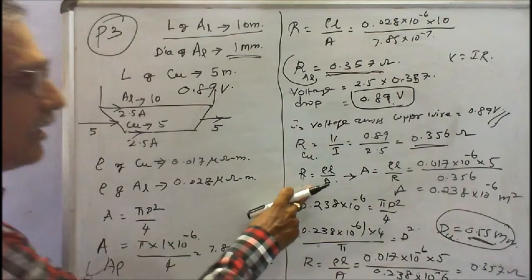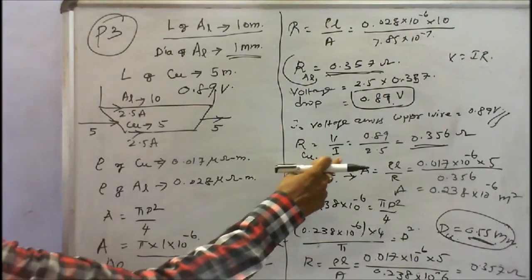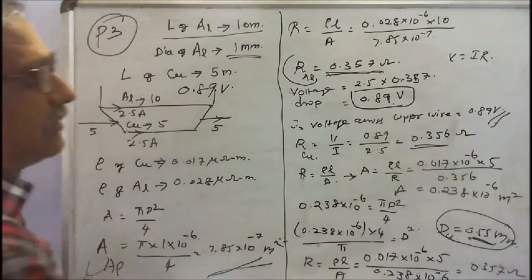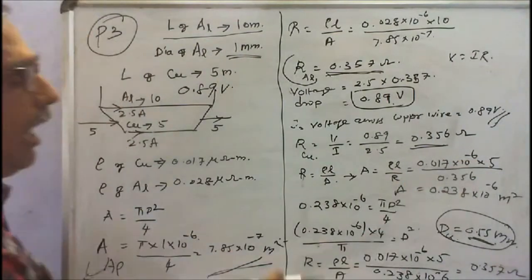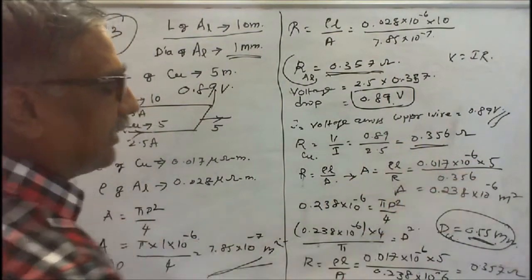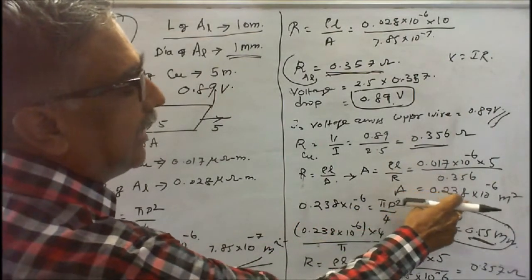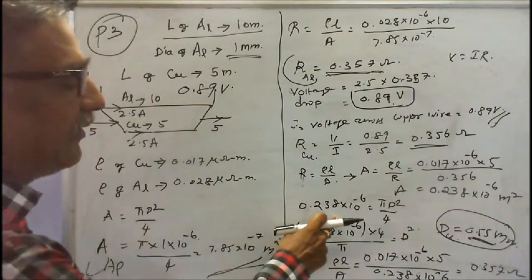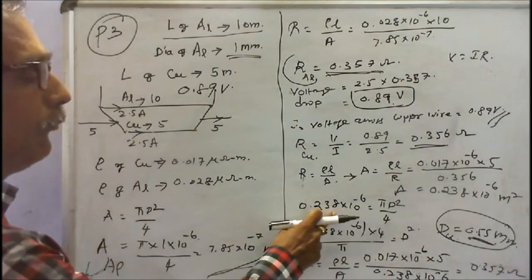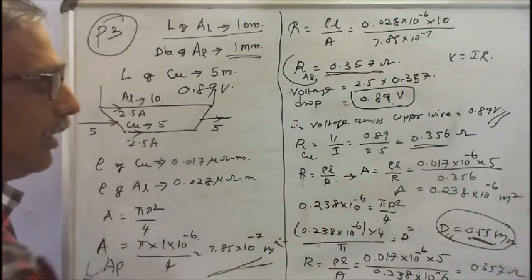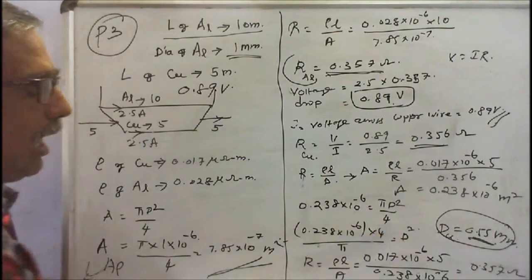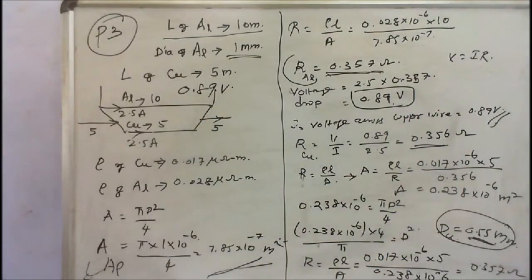Knowing the resistance, resistivity (0.017 × 10⁻⁶ ohm-meter), and length (5 m) of the copper wire, cross-sectional area A = rho × L / R = 0.238 × 10⁻⁶ m². Since A = π D² / 4, then D² = 4A / π. Substituting: D = 0.55 mm. This is the diameter of the copper wire.